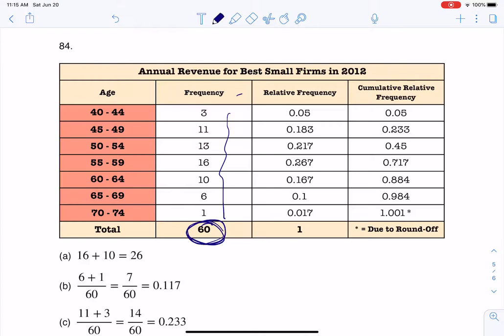Anytime you want to go from frequency to relative frequency, or cumulative frequency to cumulative relative frequency, whenever you add that word relative, we're starting to talk about percentages, proportions, fractions, ratios. The fraction always comes from taking your frequency number and dividing by your sample size.